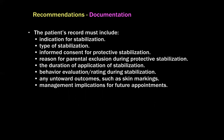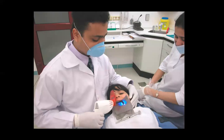With regard to documentation recommendations, the patient's records must include: indication for stabilization, the type of stabilization used, informed consent obtained for protective stabilization, reason for parental exclusion if applicable, duration of application of stabilization, behavior evaluation or rating during stabilization, any untoward outcomes such as skin markings, and management implications for future appointments. All these should be documented in the patient's chart. The best approach is always managing a patient with various non-pharmacological behavior management techniques, with the child cooperative on the dental chair, using four-handed dentistry with an assistant.